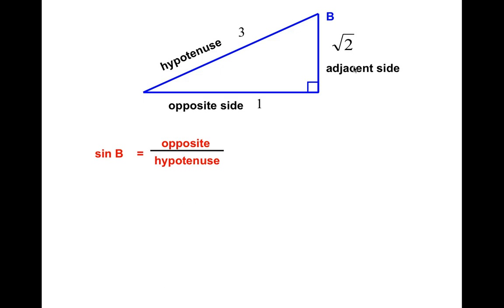So first, let's find the sine of angle B. That is opposite over hypotenuse. So it is 1 divided by 3, one-third. So the sine of B is one-third.